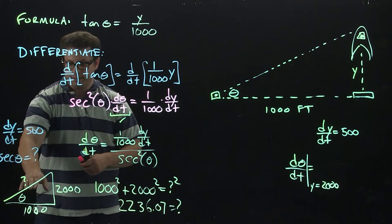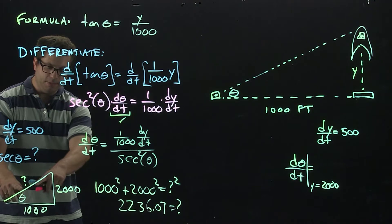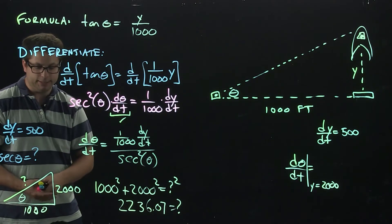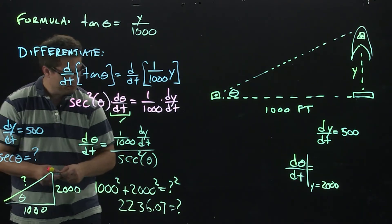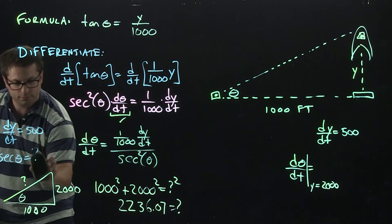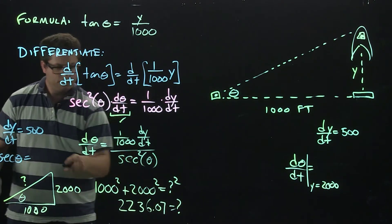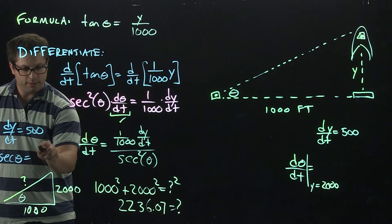Then what is secant theta? Well secant theta is going to be the hypotenuse over the adjacent. So let's erase the question mark now.